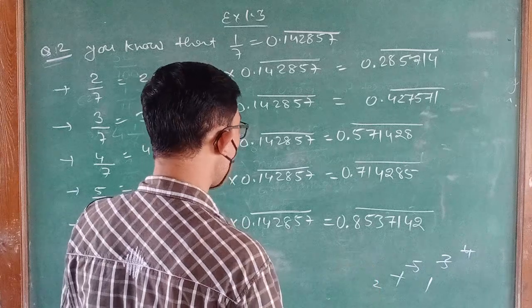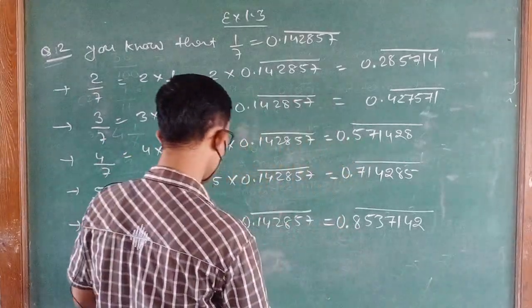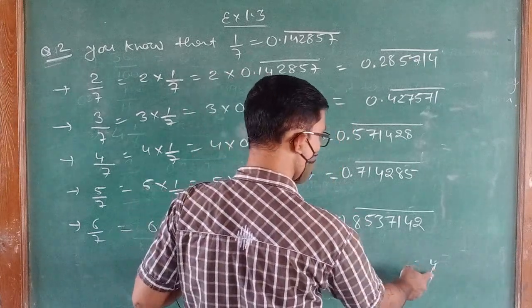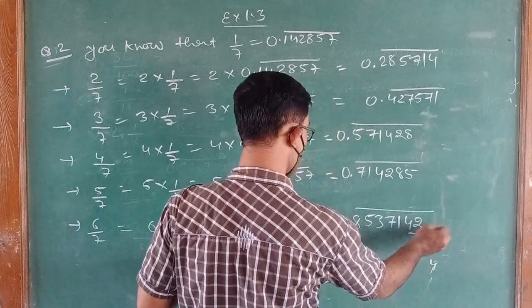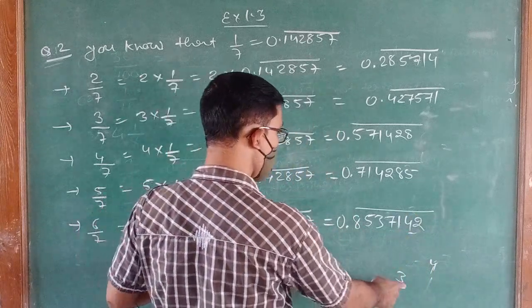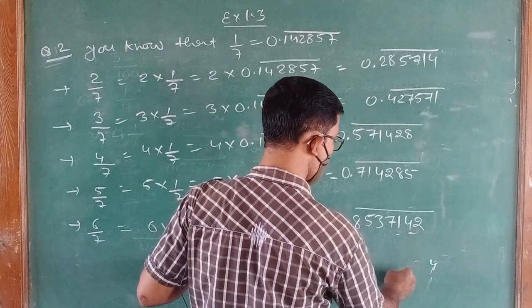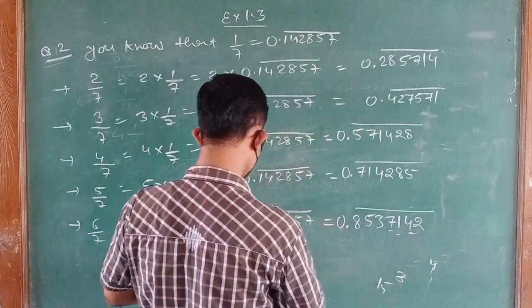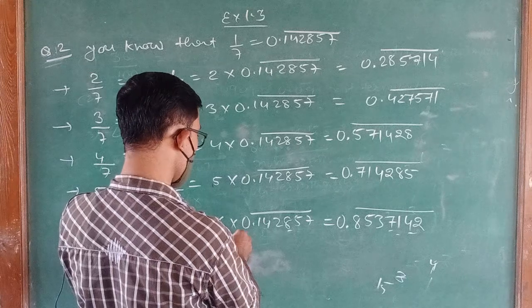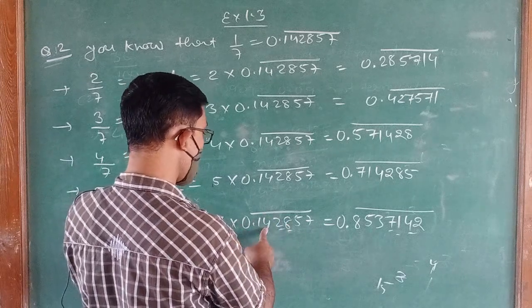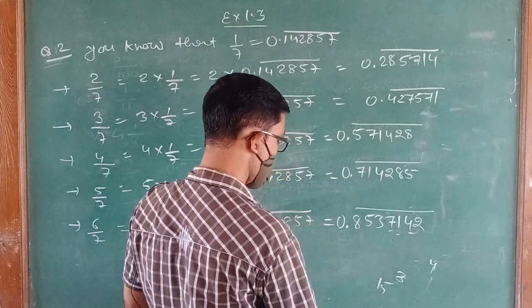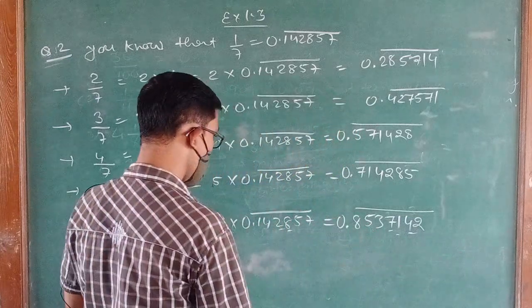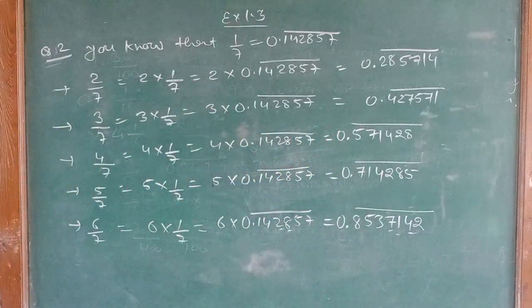For 6 upon 7: 6 × 0.142857. Six sevens are 42 carry 4, six fives are 30 and 4 = 34 carry 3, six eights are 48 and 3 = 51 carry 5, six twos are 12 and 5 = 17 carry 1, six fours are 24 and 1 = 25, six ones are 6 and 2 = 8 — so 6 upon 7 = 0.857142.